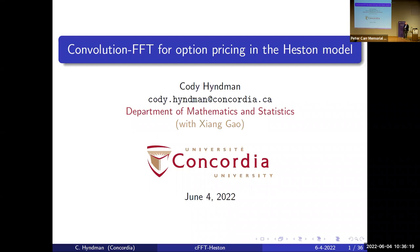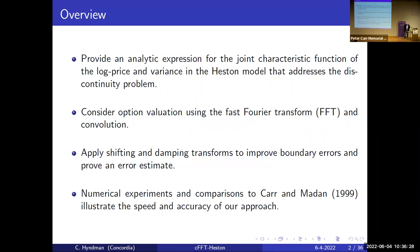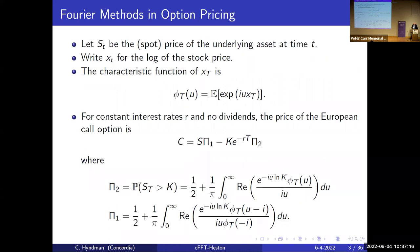So this is on what I call Convolution FFT, and we restrict ourselves to the Heston model. The Convolution FFT really builds a lot, or was inspired a lot by the Carr-Madan paper that introduced FFT to option pricing. And we are going to give an analytic formula for the joint characteristic function in the Heston model. Jim Gatheral has an expression in his book, so maybe I'm bringing coals to Newcastle here for this, but the thing is, we do some kind of boundary error control to improve our estimates, and we use these convolution ideas.